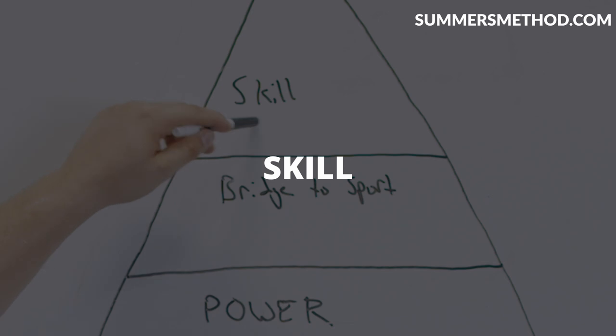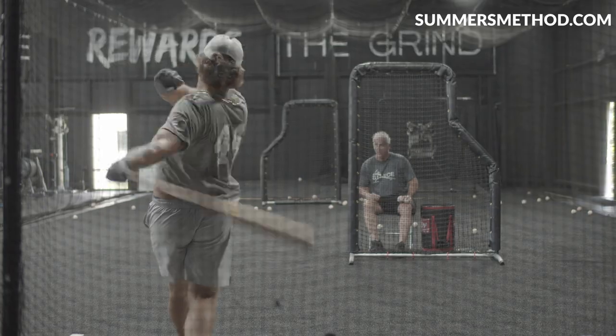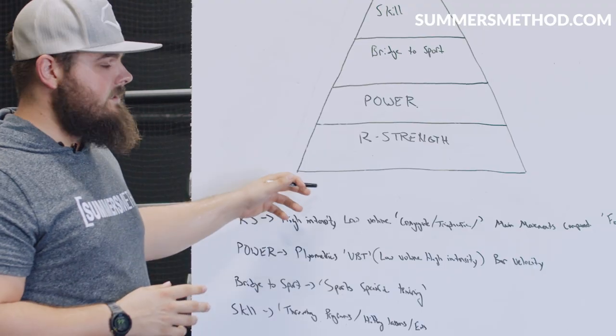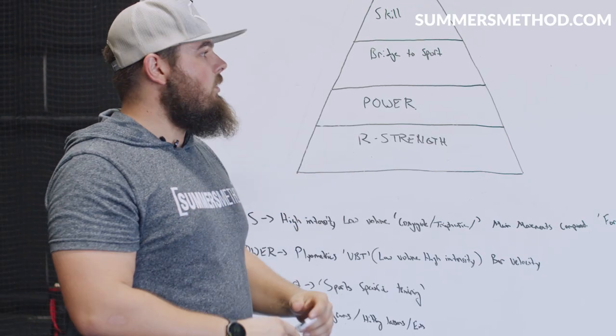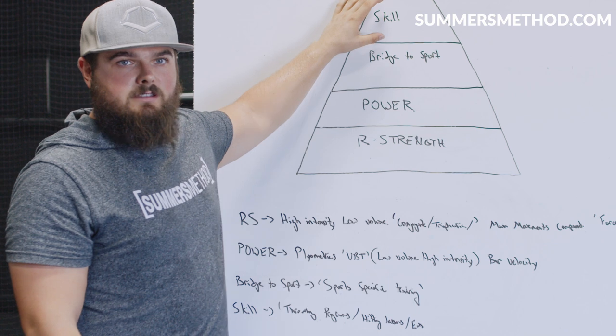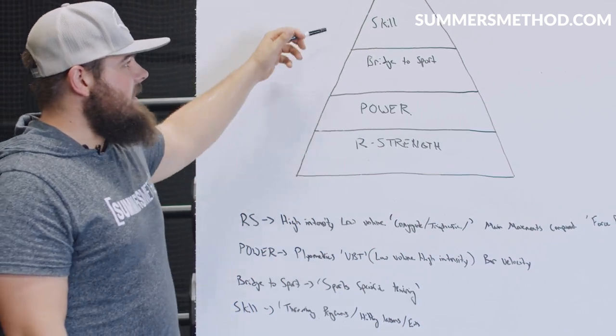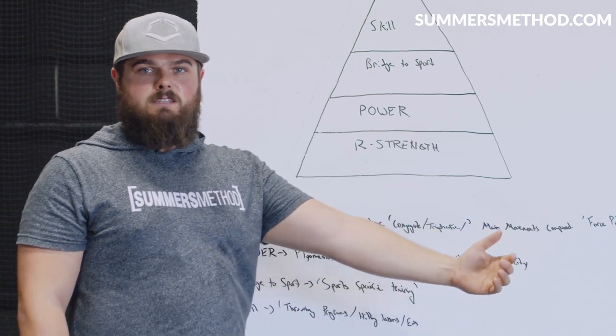So now since we bridge that to sport, we hit our sports specific training. The top, the very top of the pyramid is our skills training. So these are our hitting lessons. These are our weighted ball throwing programs, our long toss throwing programs. So it's very important that you understand in order to get better on the field from what we're doing in the weight room, you have to knock off each tier. There's prerequisites to this.